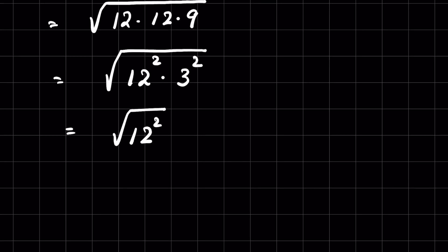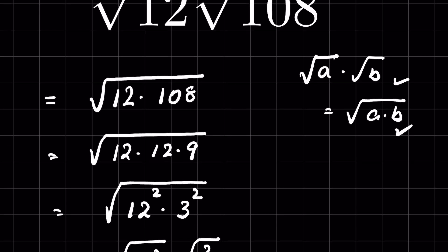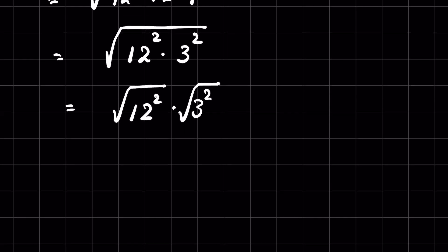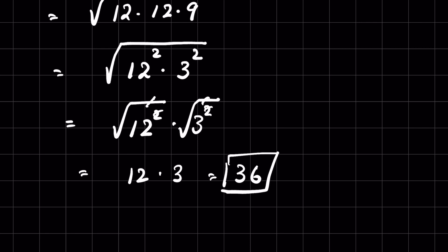We can write this as square root of 12 squared times square root of 3 squared using the product property. Now remove the square root with the squares, so this is 12 times 3, which equals 36. That is how we multiply radicals.